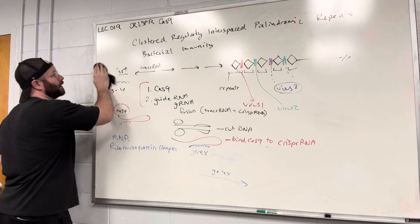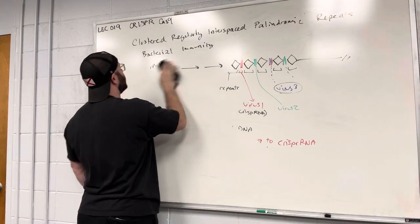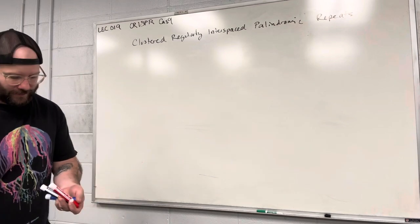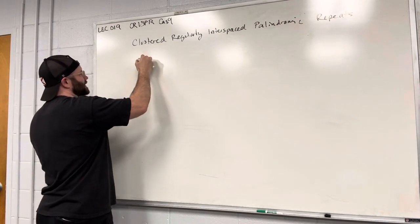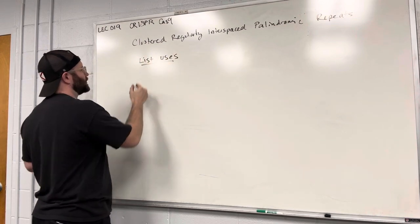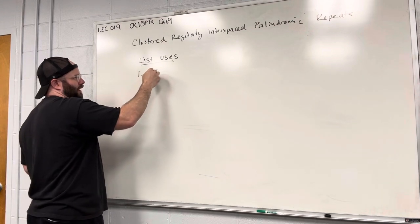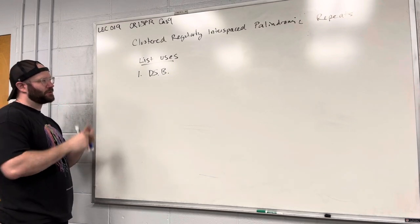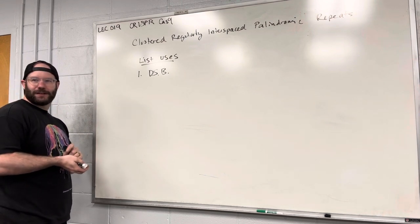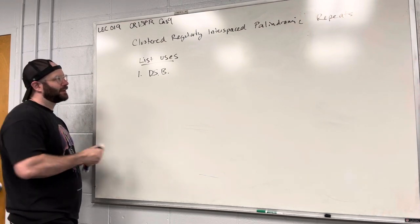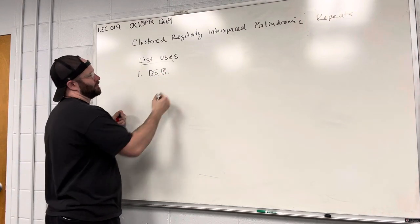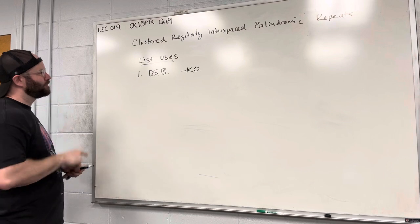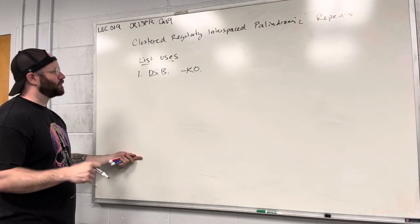So what do you do with this? Let's list uses. One, you can do double-stranded breaks. Why would that be useful? The most intuitive usage of CRISPR might be knockouts — excising chunks of a gene. Before we go into more uses, let's go through what actually happens when you get a double-stranded break.